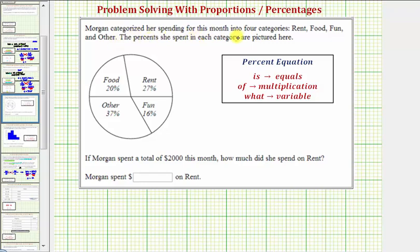Morgan categorized her spending for this month into four categories: rent, food, fun, and other. The percents she spent in each category are pictured here.